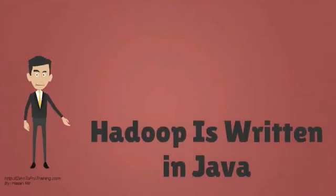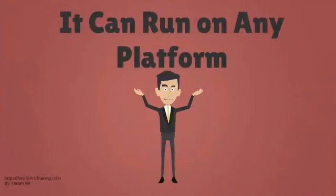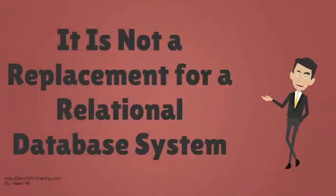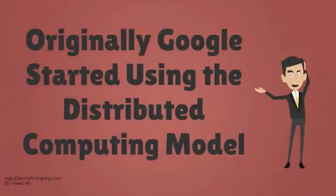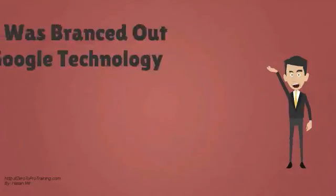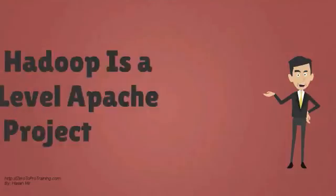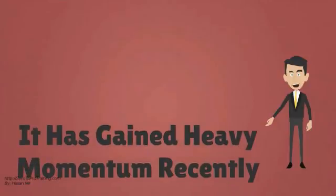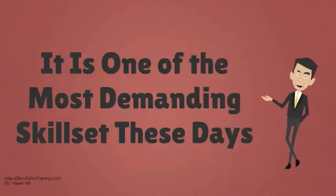Hadoop is written in Java and can run on any platform. Hadoop is generally used for unstructured data, and therefore it is not a replacement for a relational database system. Originally, Google started using the distributed computing model. Hadoop was branched out of Google technology. Now Hadoop is a top-level Apache project. It has gained heavy momentum recently and is one of the most demanding skill sets these days.